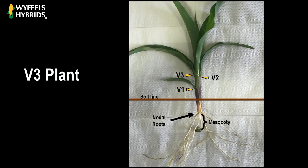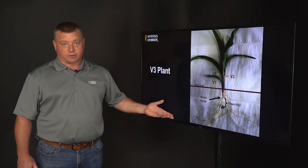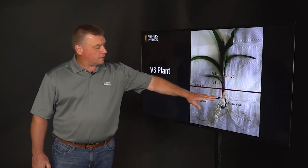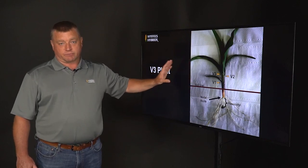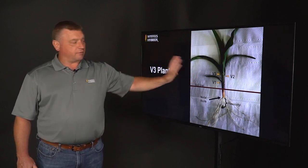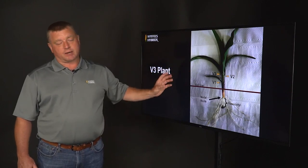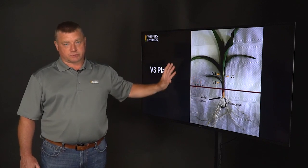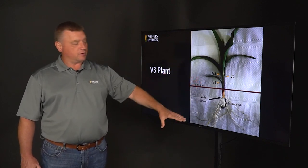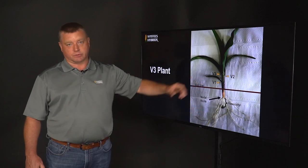As we move ahead into a V3 corn plant, we have three leaves with three defined collars. Below ground, a new root system is starting — the nodal root system, sometimes called the crown roots. The corn plant is going to start relying on that nodal root system from this point all the way up to about V5. This is the transition from seed roots to the nodal root system, occurring from V3 to V5.